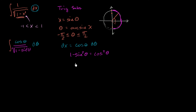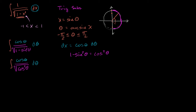We have to be a little careful here. We need to think about whether cosine theta is positive or negative. When you square a number and take its principal square root, you're essentially taking the absolute value. So the square root of cosine squared theta is the absolute value of cosine theta. Right now, without more information, all we can say is that this integral equals cosine theta over the absolute value of cosine theta d theta. We can't simplify further without knowing the sign of cosine theta.